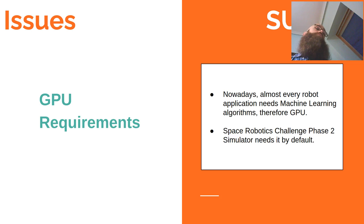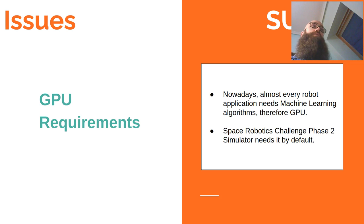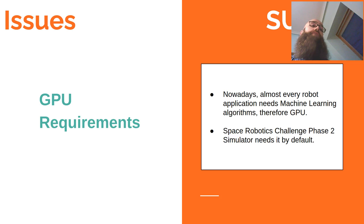Finally, another major issue is GPU requirements. Most algorithms we need today are based on machine learning, so a GPU is needed. The Space Robotics Challenge Phase 2 simulator requires it by default, though they provide a mechanism to run purely on CPU — and in our case we evaluated the approach running on CPU only.